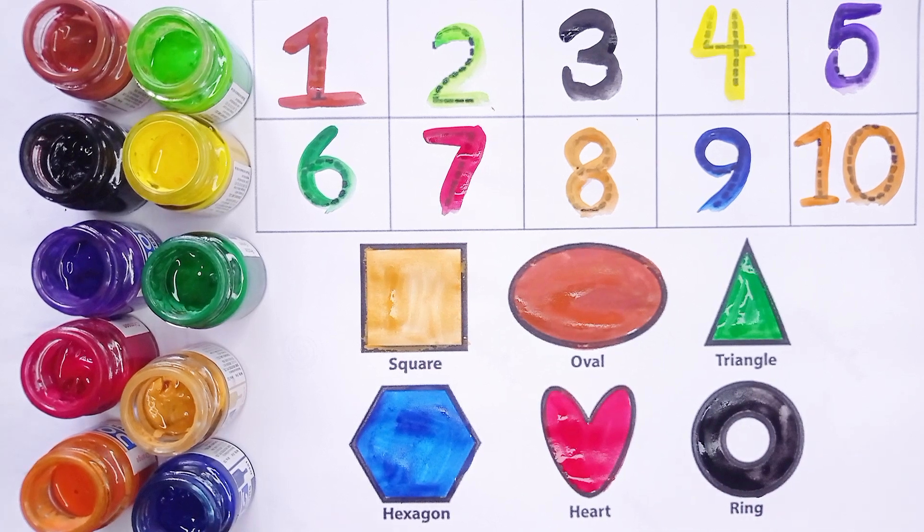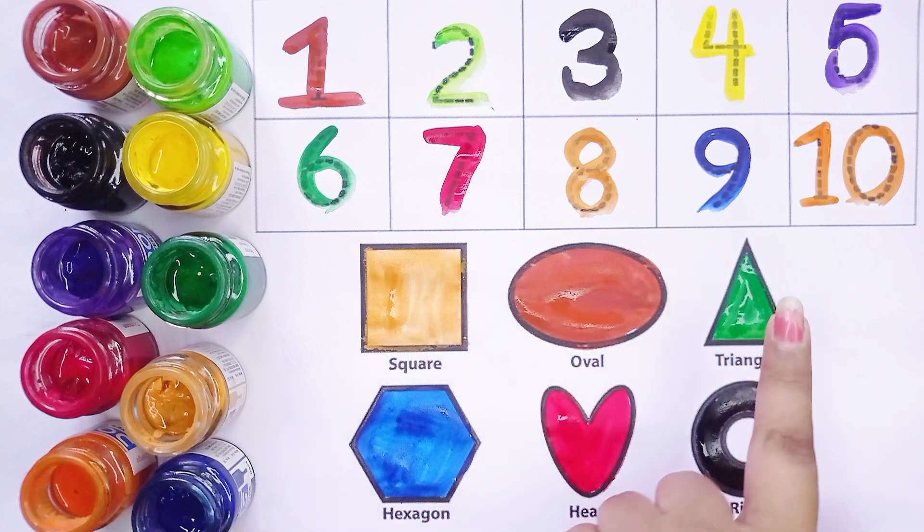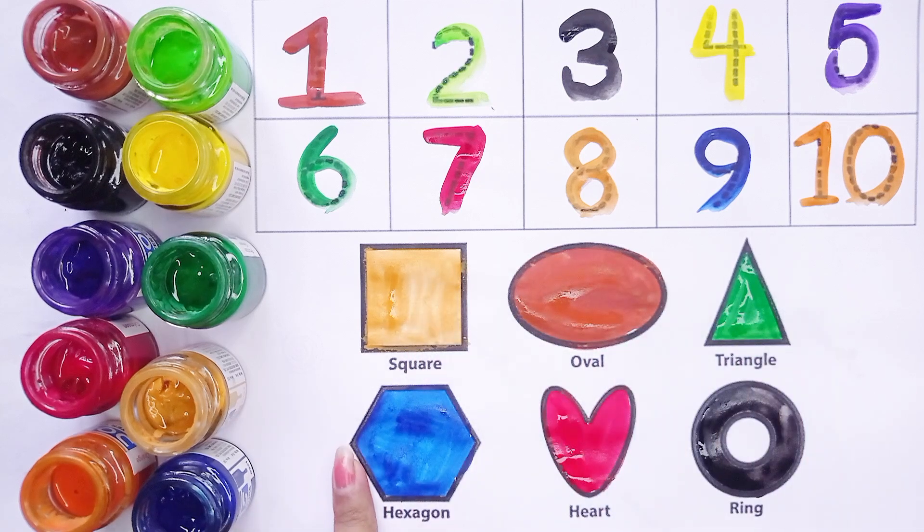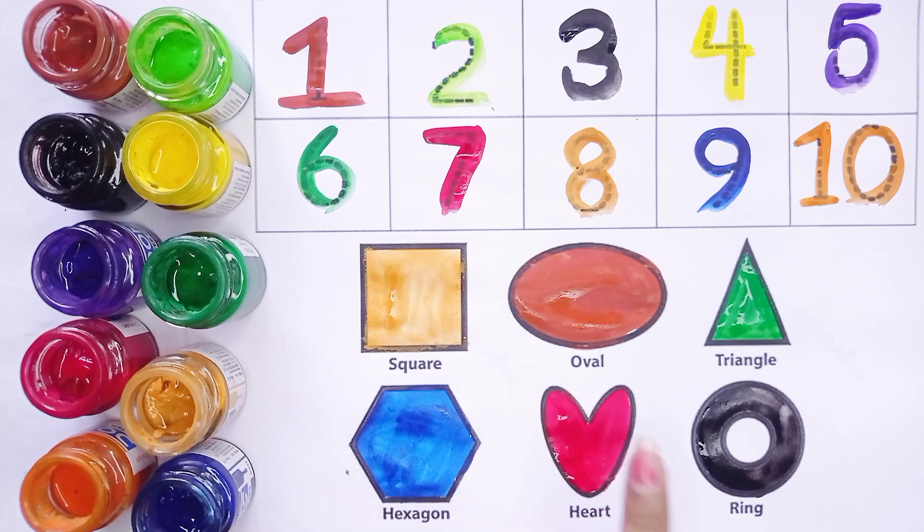This is a square. Oval. Triangle. Hexagon. Heart. Ring.